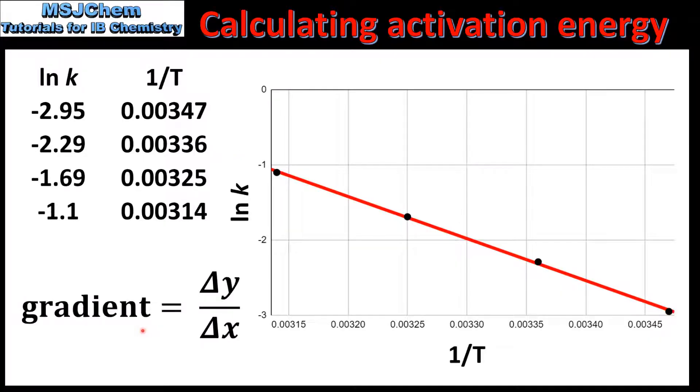The first step is to find the gradient of the line. The gradient is equal to the change in the y-axis over the change in the x-axis. Here we can see how to determine the change in the y-axis and the change in the x-axis.